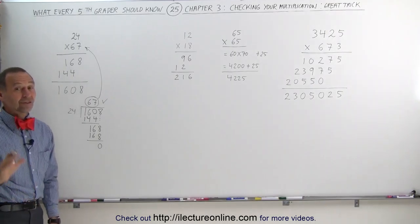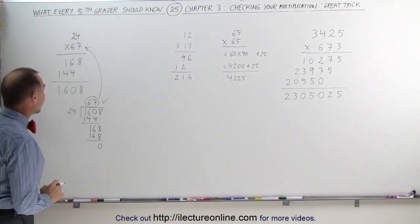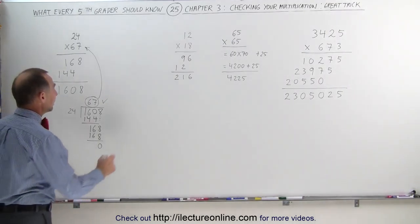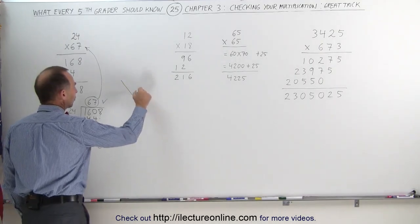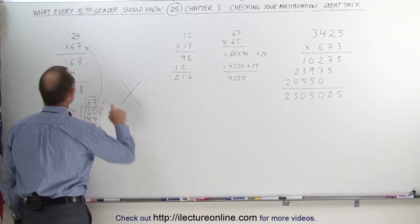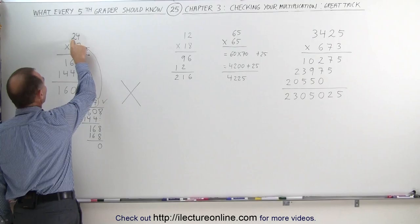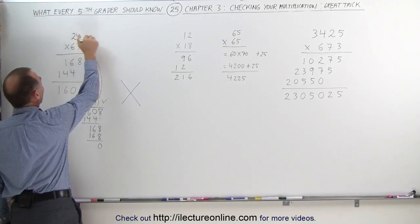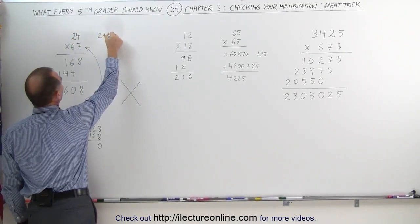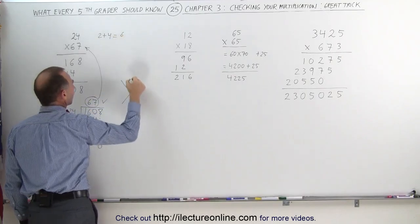That's a lot of work. There's actually a much easier way to do this. Instead, what we can do is we can draw a cross like this, two lines across. Then we take the first two numbers over here, we take the number 2 and 4 added together, 2 plus 4, that gives us 6, and that number goes in here.